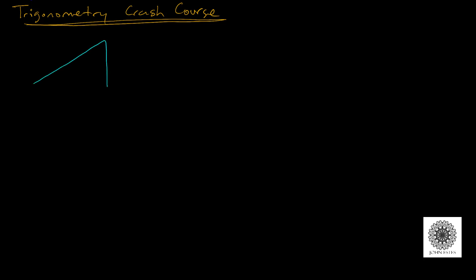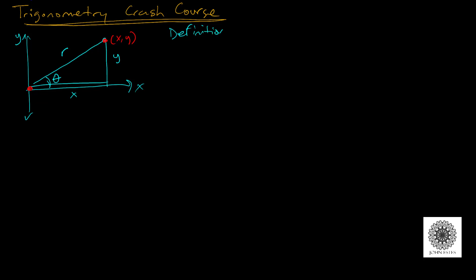We're going to start with a triangle and drop it into the XY plane so that the triangle's corner is resting on (0, 0). What we're interested in — what trigonometry stems from — is we have a central angle and we want to relate that angle to the sides of the triangle, some proportion of the sides. This triangle has a radius r, and the point up here (in red) is (x, y), so my triangle has a base length of x and a height of y.